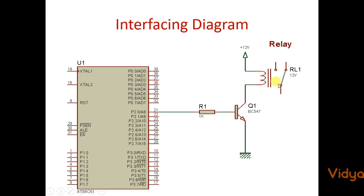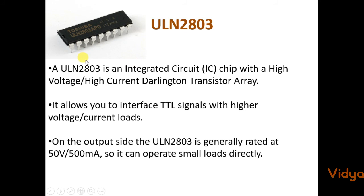So instead of transistor to switch multiple relays we use this IC called ULN 2803. It's an integrated circuit with a high voltage current Darlington transistor array.